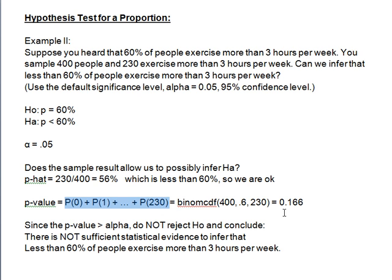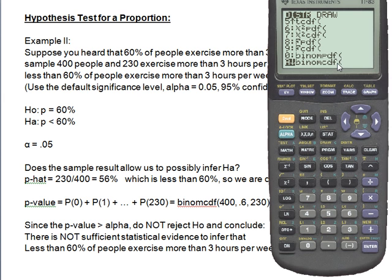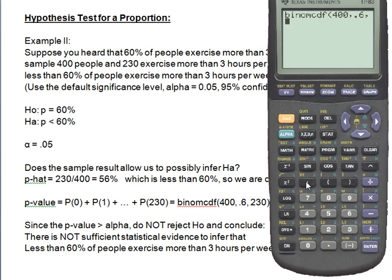So the exact probability is calculated by adding these all up using our calculator. The parameters — I like to use the mnemonic NPR, like National Public Radio — N is the number sampled, P is the assumed probability under the null hypothesis, and R is the number actually obtained. We put it in the calculator. We go to second, distributions, and scroll down to binomial cumulative distribution. Enter. We type in 400, comma, .6, 230, close parenthesis, and hit enter. And there's our probability: 0.166.